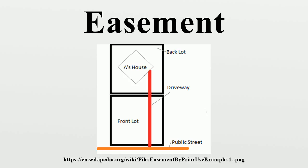A floating easement exists when there is no fixed location, route, method, or limit to the right-of-way. For example, a right-of-way may cross a field without any visible path, or allow egress through another building for fire safety purposes. A floating easement may be public or private, appurtenant or in gross. It has been defined as an easement defined in general terms, without a definite location or description. Furthermore, a floating easement becomes fixed after construction and cannot thereafter be changed.